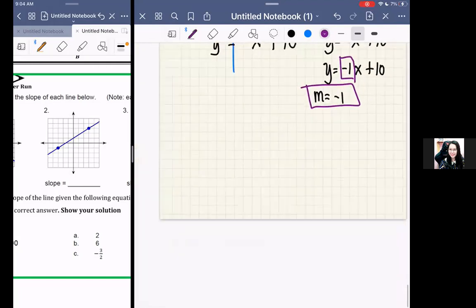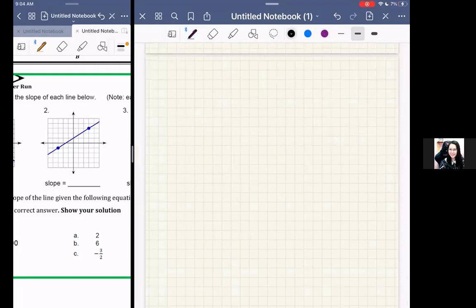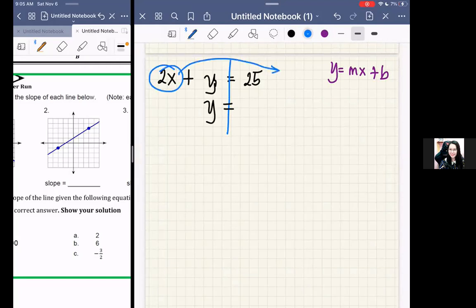Another one. What if I have 2x plus y equals 25? Again, we have y equals mx plus b. So y equals, 2x will move to the other side, that will become negative 2x plus 25.